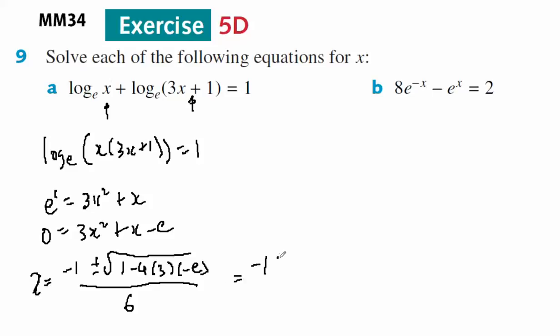I have negative 1 minus the square root of 1 plus 12e all over 6, or I've got negative 1 plus the square root of 1 plus 12e all over 6.